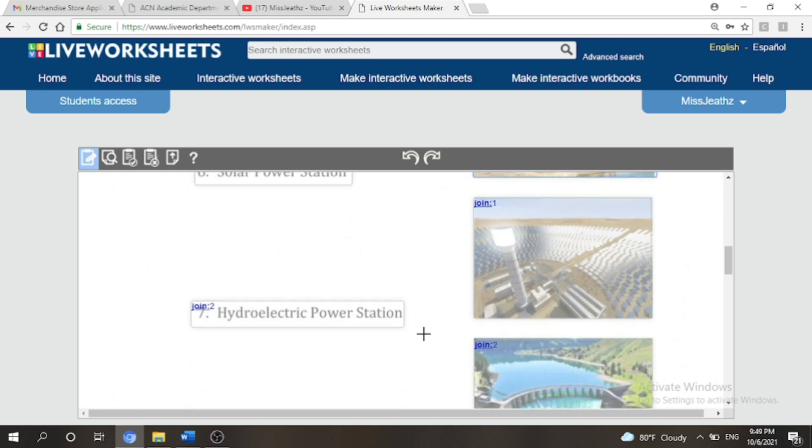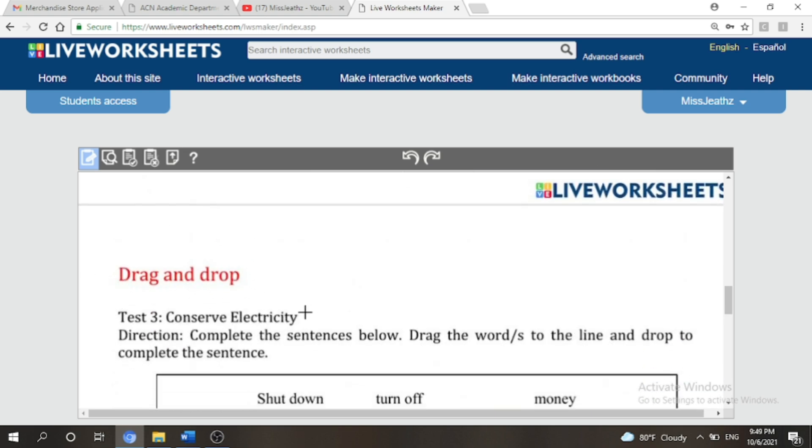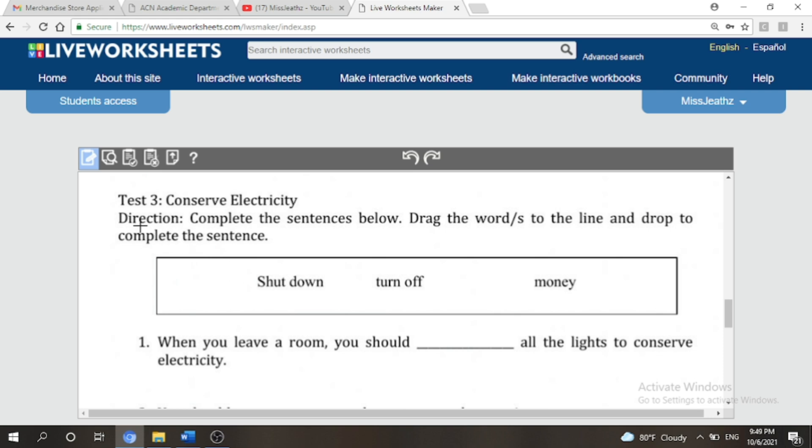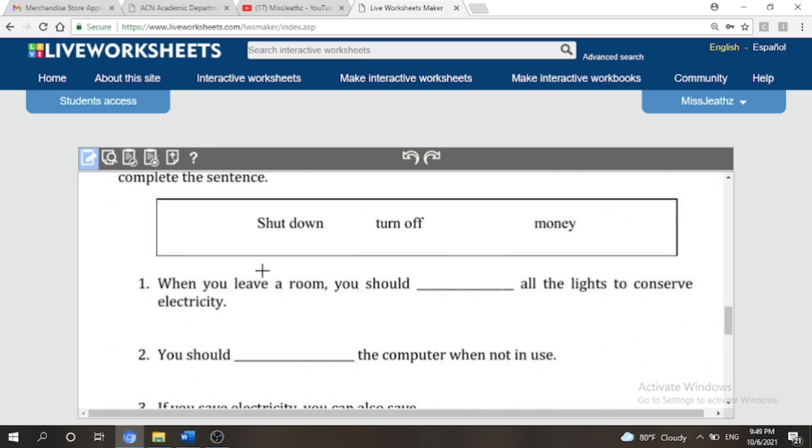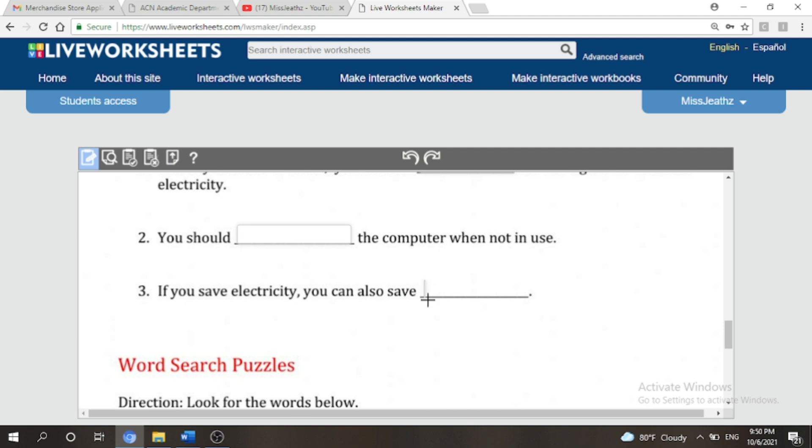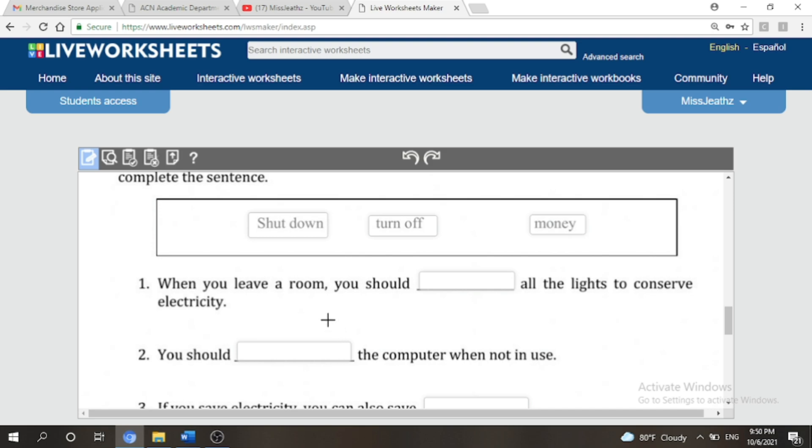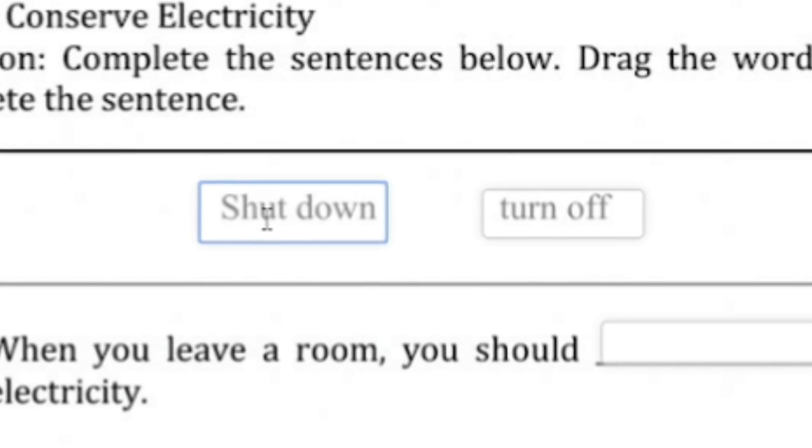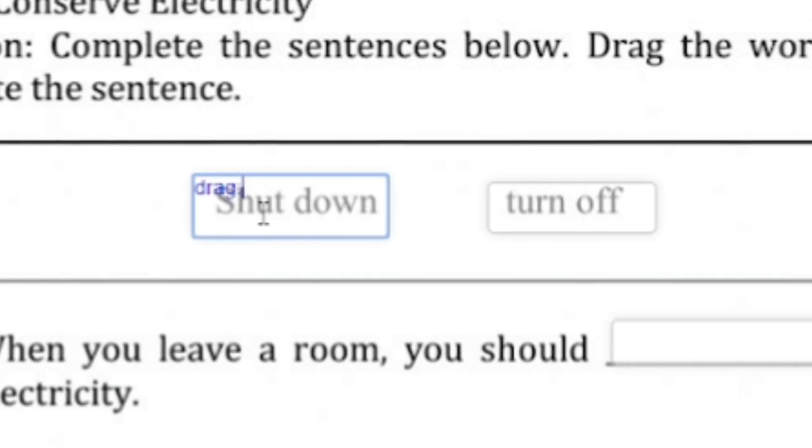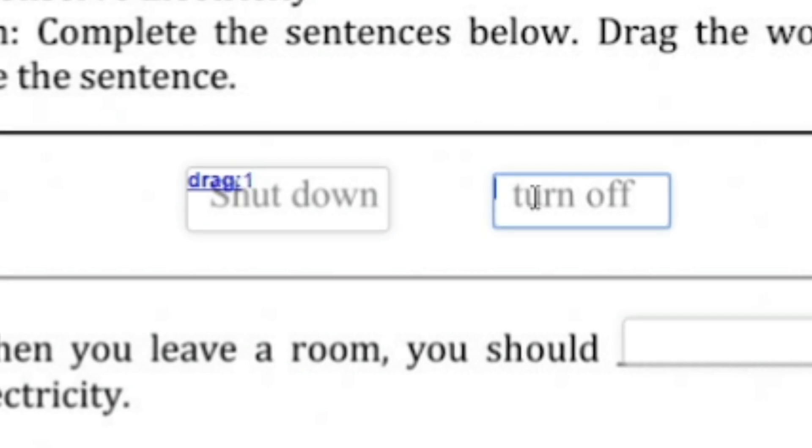And that's it for our matching time. Next is the drag and drop. Now let's read the direction first. Complete the sentences below, drag the word or words to the line and drop to complete the sentence. So what we're going to do here is to make a box on the words that we are going to drag, and then we are also going to make a box on the drop area. There you go. Now the command that we're going to use here are drag and drop. So first we use the word drag colon followed by a number.